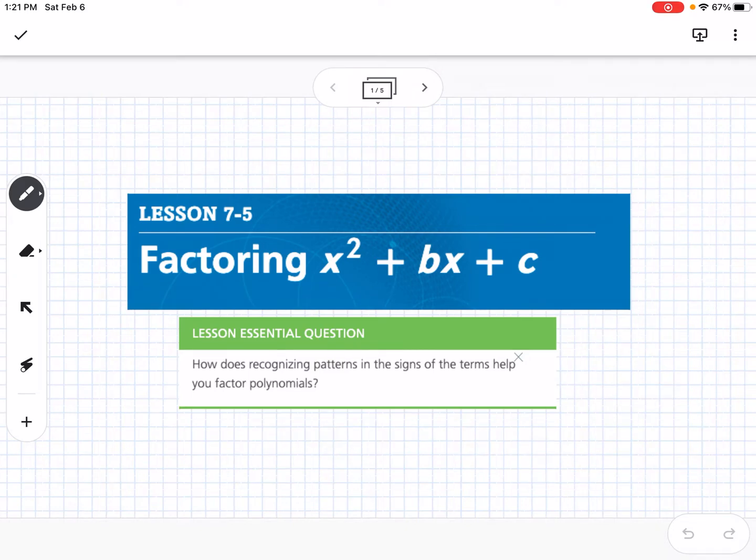This is lesson 7-5, which is factoring x squared plus bx plus c. Our essential question is how does recognizing patterns in the signs of the terms help you factor polynomials?